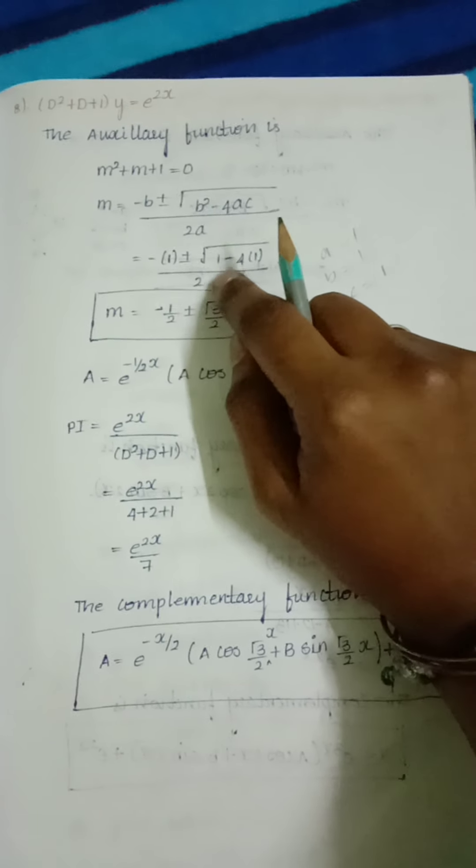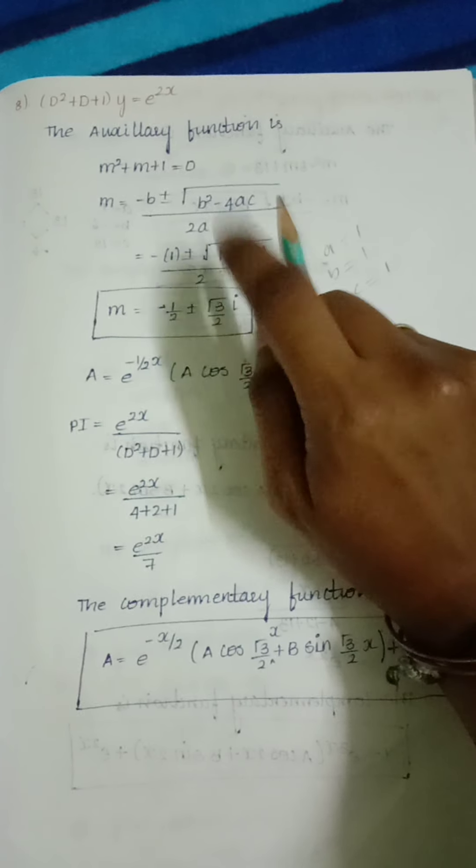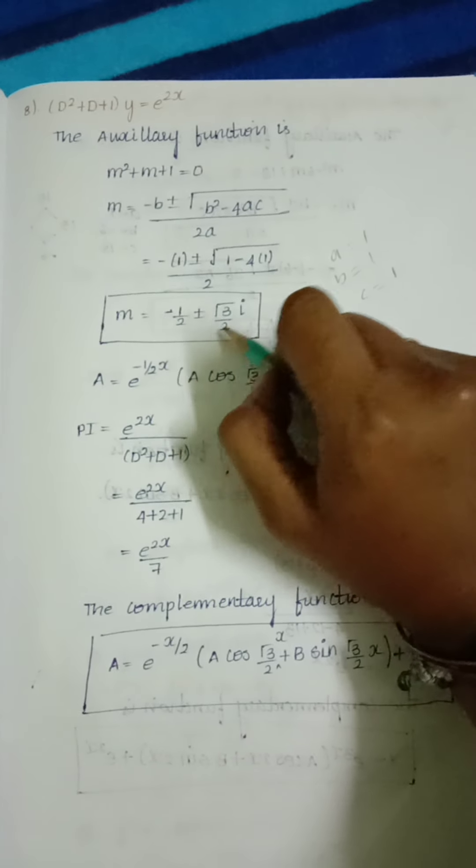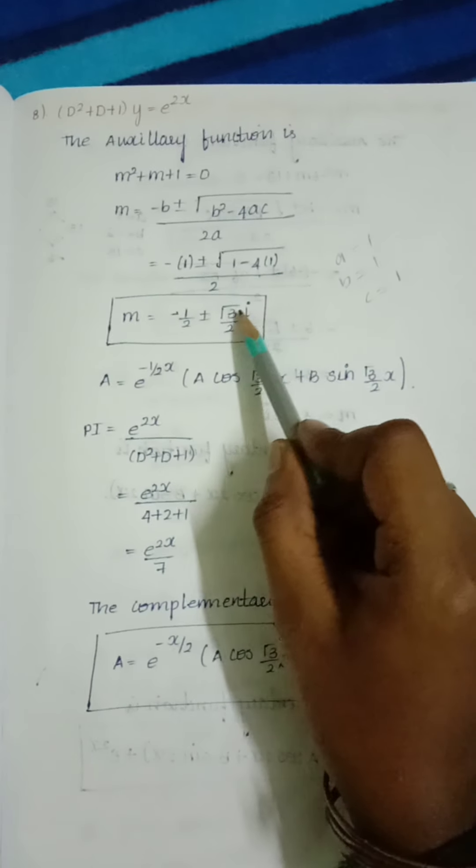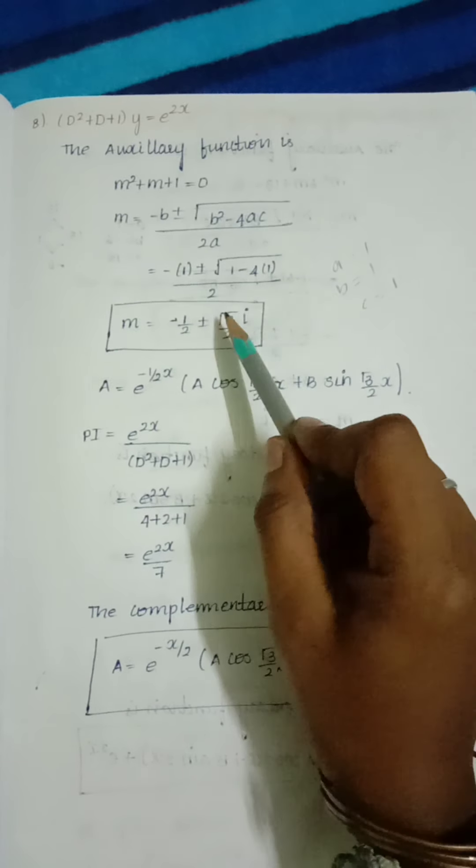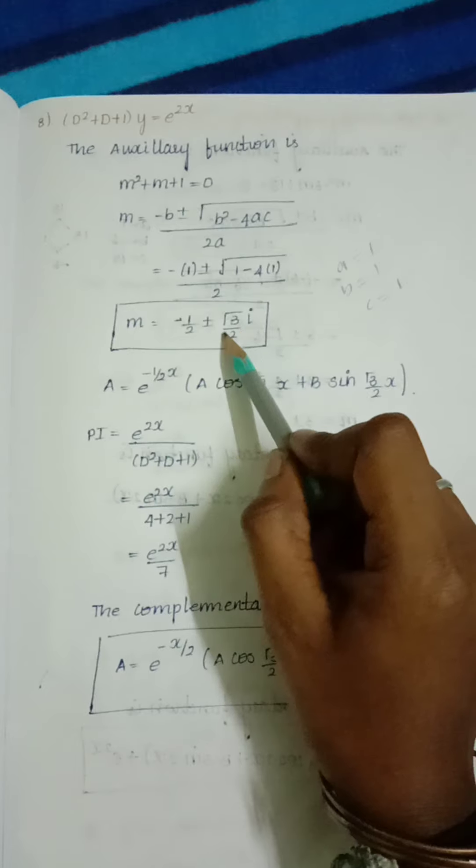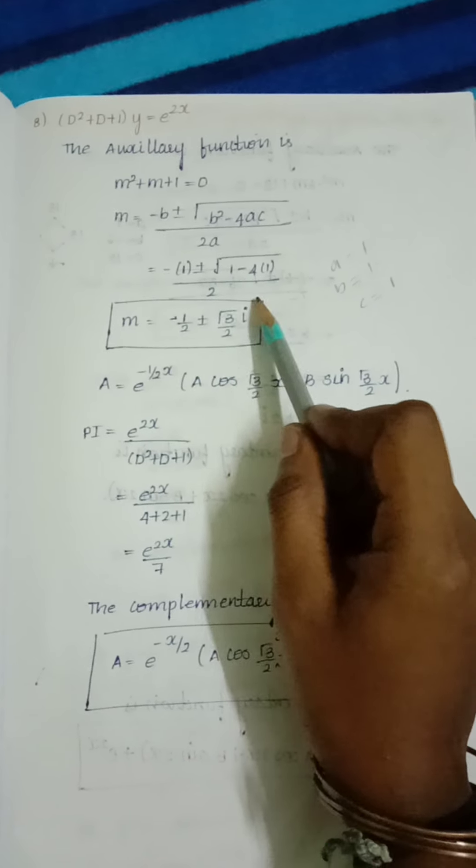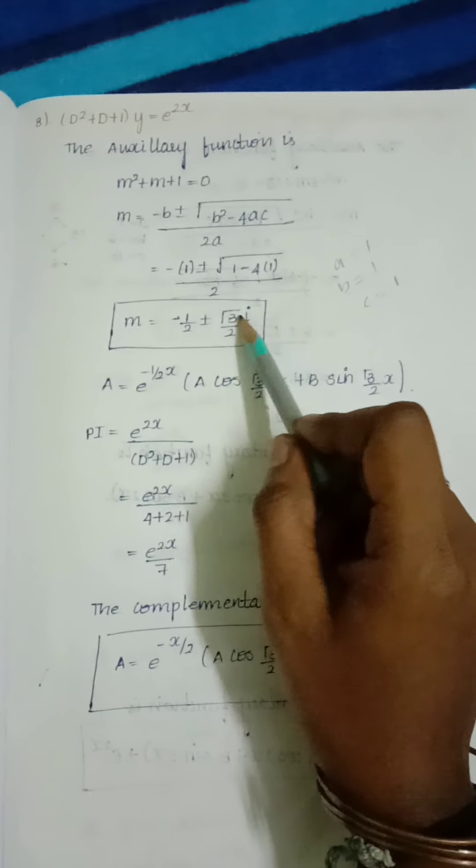If we substitute these values, we get negative 1 plus or minus root of 1 minus 4 divided by 2. If we simplify this, we get negative 1/2 plus or minus root of negative 3. Since negative 3 is inside the root and root of negative 1 is i, we get √3/2 i.